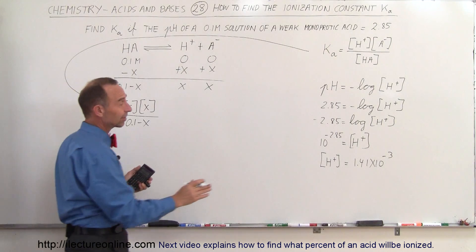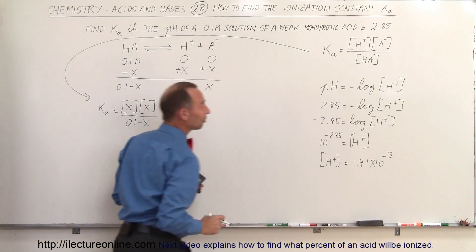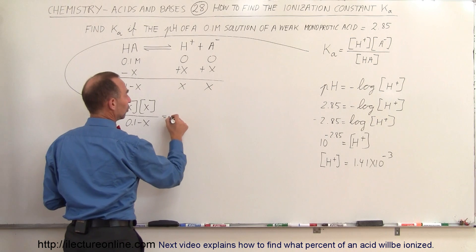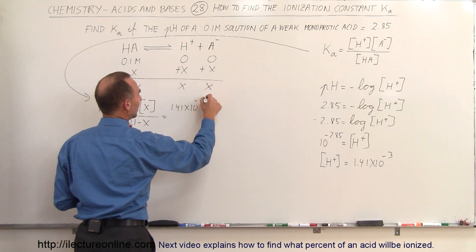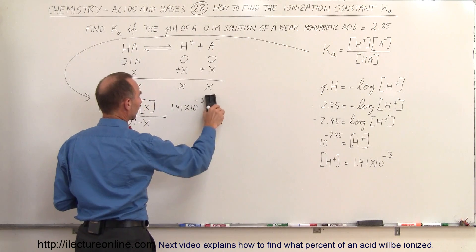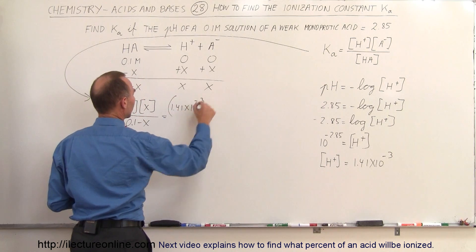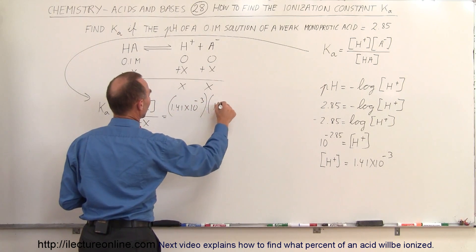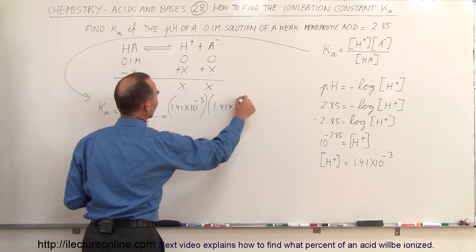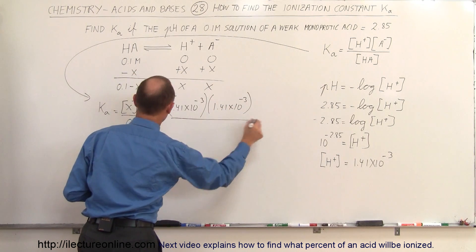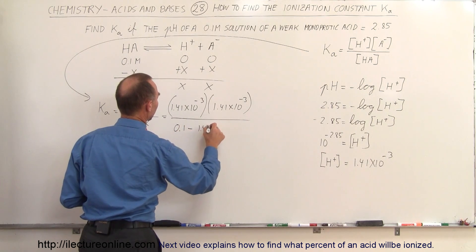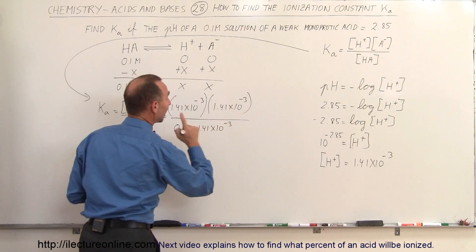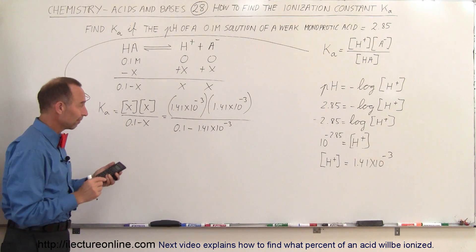we can see that this is equal to x times x divided by 0.1 minus x. And notice that x here is the concentration of the hydrogen ion, so this is equal to 1.41 times 10 to the minus 3. And we don't need brackets, we can simply use parentheses. So we're going to multiply that, 1.41 times 10 to the minus 3, essentially squaring that number, divided by 0.1 minus 1.41 times 10 to the minus 3. And that should give us the ionization constant.